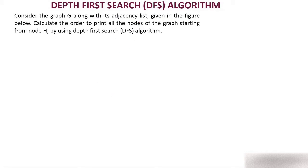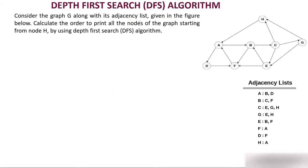Now let's solve a DFS question. Consider a graph along with its adjacency list. For every node — A, B, C, D, and so on — the adjacency list lists the neighbors. For example, the neighbors of A are B and D, since there is a direct path. You cannot say F is adjacent to A because there is no path from A to F. The neighbors of B are C and F.